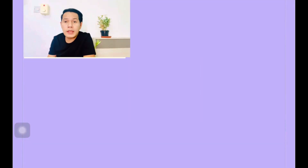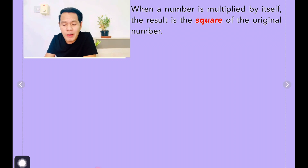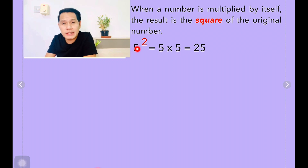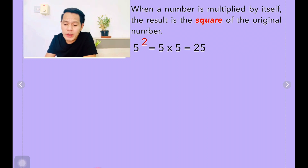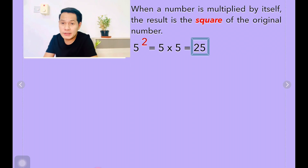So this is the beginning part. When a number is multiplied by itself, the result is the square of the original number. So let's say you have 5 to the power of 2 — that is 5 times 5. The base here is 5 and 2 is the exponent, or the index. We multiplied it by itself 2 times, so you have 25. And 25 here is what we call a perfect square.